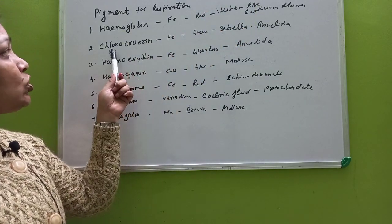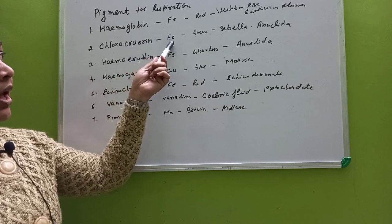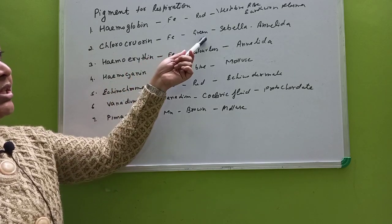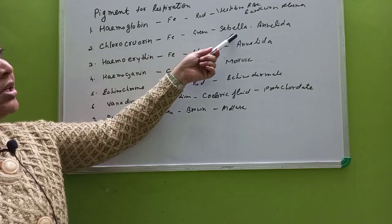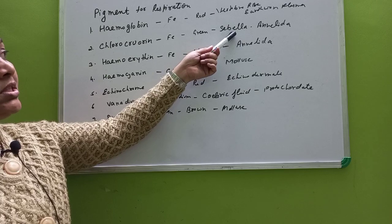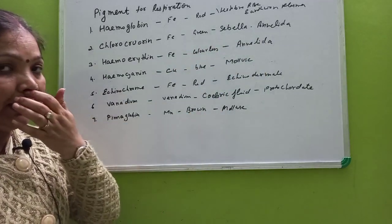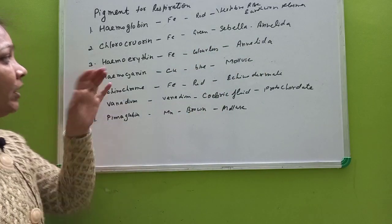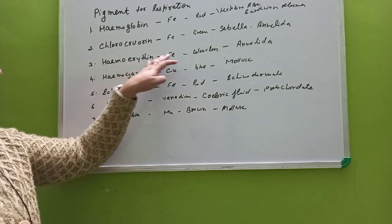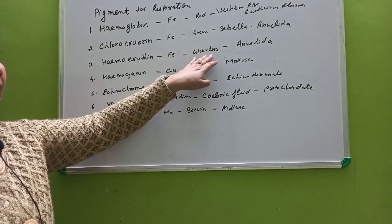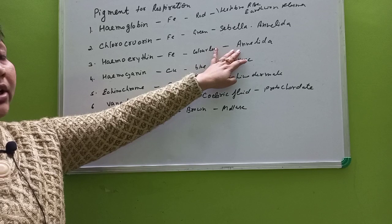The second pigment is chlorocruorin, which also contains iron but is green in color, and it is found in Sabella in phylum Annelida. The third one is hemerythrin, which also contains iron and is colorless, and it is found in Annelida.